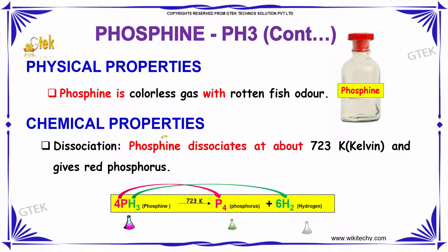In case of chemical properties, Phosphine dissociates at about 723 Kelvin to give back its phosphorus, which is of almost red color, and hydrogen.